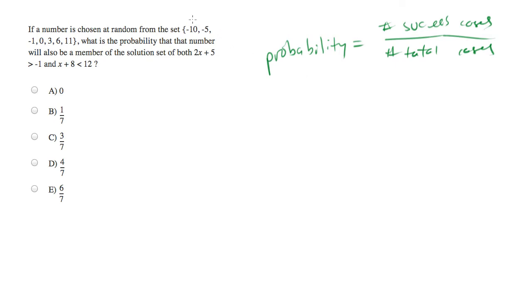Now we're given a set of numbers and it has one, two, three, four, five, six, seven numbers in it. So we know that our probability of success is going to be the number of success cases over seven.